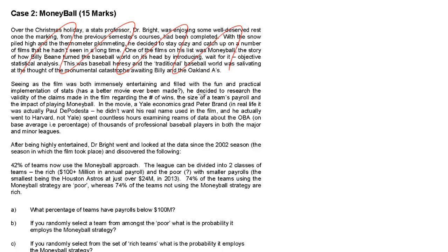It says one of the films was Moneyball, the story of how Billy Beane turned the baseball world on its head by introducing objective statistical analysis. This was baseball heresy. We really don't ever need to read this again — there's nothing there useful for statistical analysis. All that they've mentioned is that statistics were used by a baseball team. Beyond this, Dr. Bright decided to research the validity of the claims made in the film regarding the number of wins, the size of a team's payroll, and the impact of playing Moneyball. So he's keeping track of three different things.